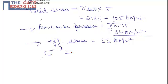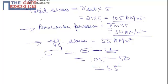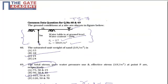We know that effective stress, or sigma effective, is sigma total minus pore water pressure. Sigma total in this case is 105, pore water pressure is 50, as a result effective stress comes out as 55 kilonewton per meter square, making C as the correct choice for question number 49. Thank you.